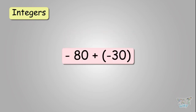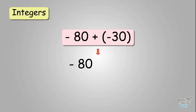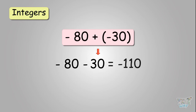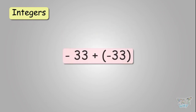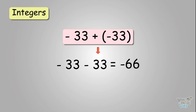Negative eighty plus negative thirty — you'll be adding. It becomes negative eighty minus thirty, and you get negative one hundred and ten. Now negative thirty-three plus negative thirty-three — open the brackets to get negative thirty-three minus thirty-three. You add to get negative sixty-six.